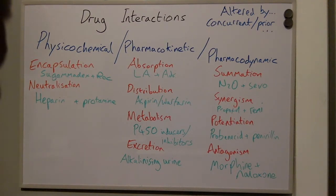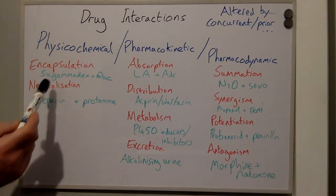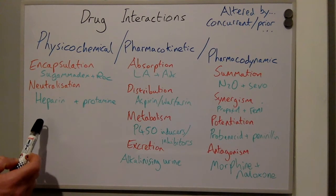Drug interactions can be classified in one of three ways: either physicochemical, pharmacokinetic, or pharmacodynamic. Two examples of physicochemical drug interactions include encapsulation — an example of this is Sugammadex encapsulating rocuronium — and neutralisation, the example for this being protamine neutralising the effect of heparin.